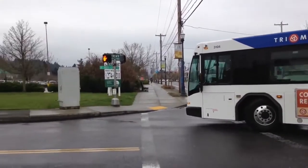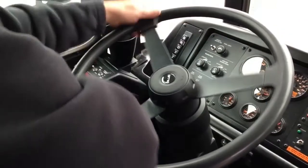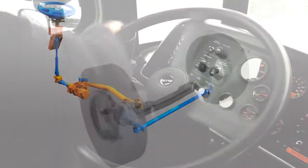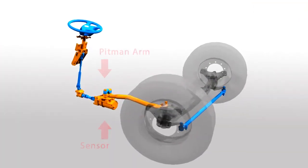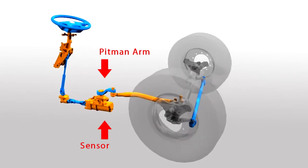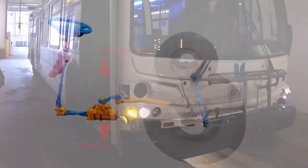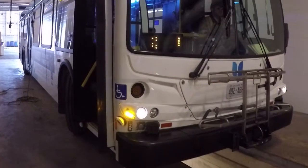The system's operation is simple yet dependable. As the steering wheel of the bus is turned, the pitman arm will pass over one of the system's proximity sensors, activating the turn warning announcement and visual LEDs.